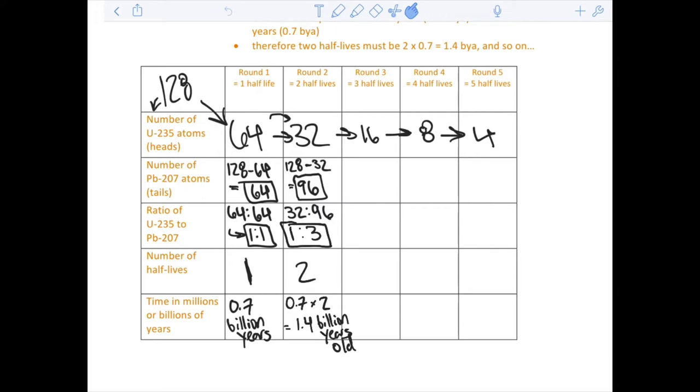This is how we age igneous rocks. Those igneous rock formations, those igneous intrusions, this is how we get the ages of those. We can actually get good ages of igneous rocks using radiometric dating.